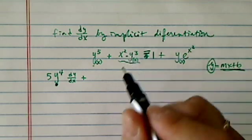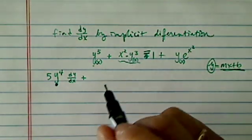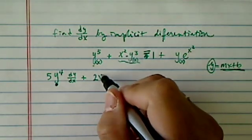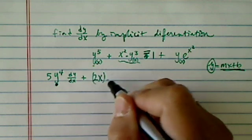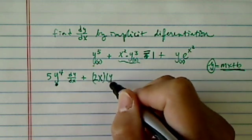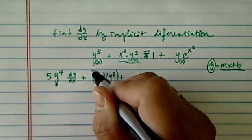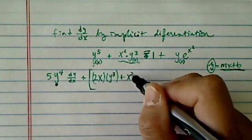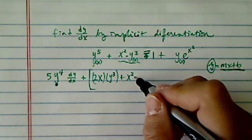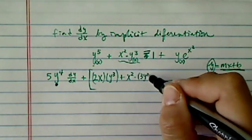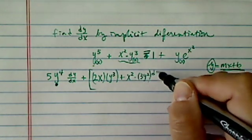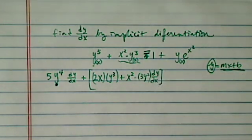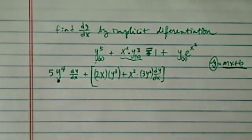We're going to have to use the product rule here. Derivative of the first part, that's 2x, leave the second one alone, plus leave the first one alone times 3y squared dy/dx. That's on the right-hand side.